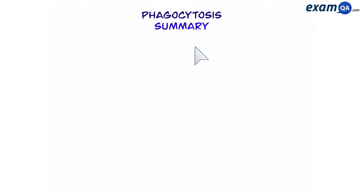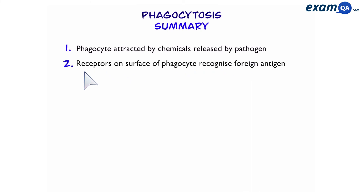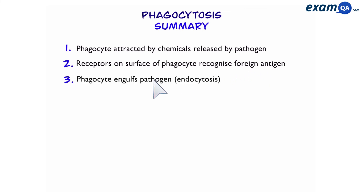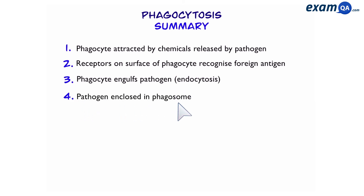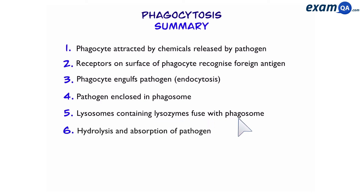To summarize phagocytosis: Step one, the phagocyte is attracted by chemicals released by the pathogen. Step two, receptors on the surface of the phagocyte recognize the foreign antigen. Step three, the phagocyte engulfs the pathogen by endocytosis. Step four, the pathogen is enclosed in the phagosome, or phagocytic vacuole. Step five, lysosomes containing digestive enzymes fuse with the phagosome. Step six, hydrolysis and absorption of the pathogen occurs.